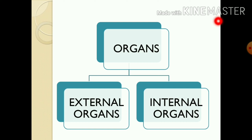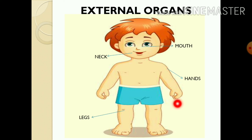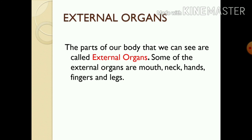There are two types of organs: external organs and internal organs. External organs are the parts of our body which we can see. The parts of our body that we can see are called external organs.